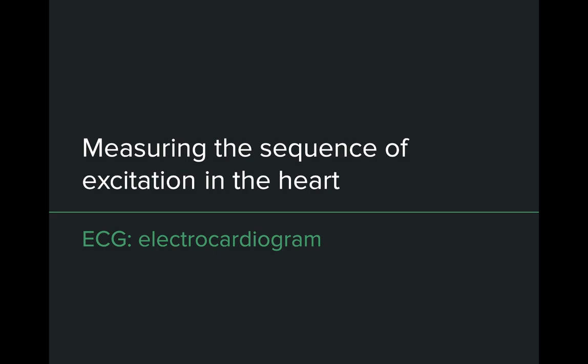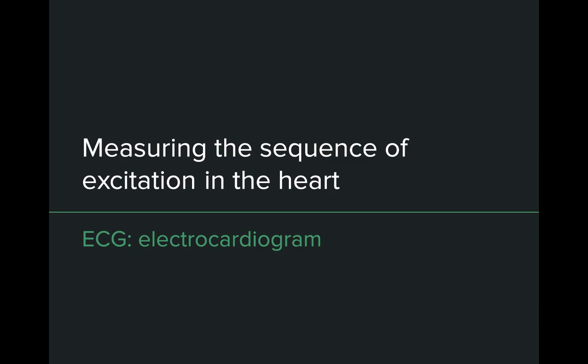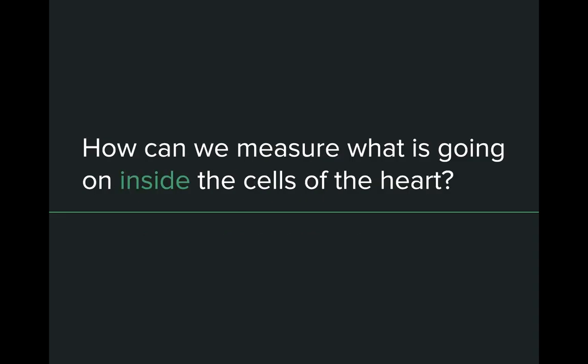This order — atria first, ventricles second — is not only important, but it can be deadly if it doesn't happen in the right order. To make sure your heart is being excited and contracting in the right order, we can measure the electrical activity of your heart using the electrocardiogram. This is very similar to the EMG we saw in lab, but instead of measuring the electrical activity of skeletal muscle, we're measuring the electrical activity of cardiac muscle — same thing, just a different muscle.